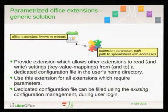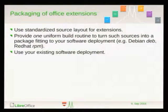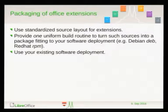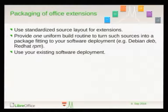For packaging, the key idea is that we use a standardized source layout for our extensions, so we can use one build routine which assembles all materials to produce a Debian package — or you could think about a Red Hat package or even an MSI package for Microsoft Windows. The key idea is: with a uniform, standardized source layout, we need just one build routine and don't have to implement it over and over. The resulting package is then put into the software deployment and deployed using existing mechanisms. This approach of standardizing the source layout has another important advantage as well.